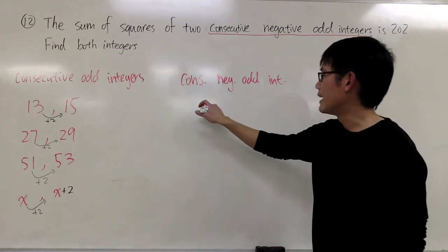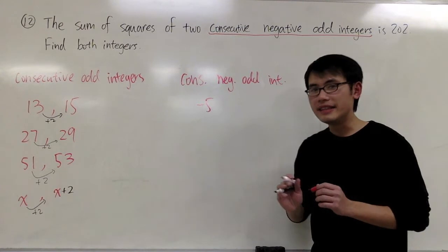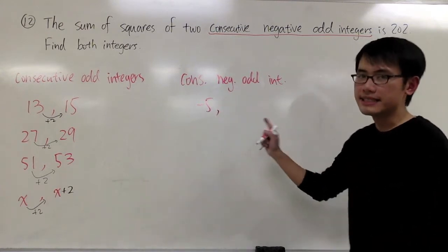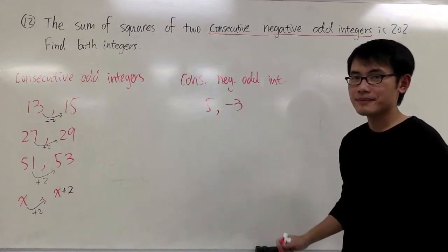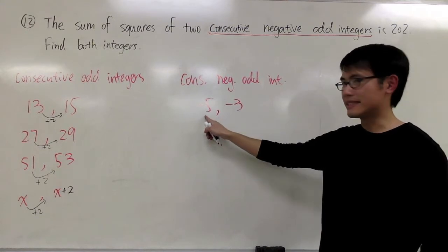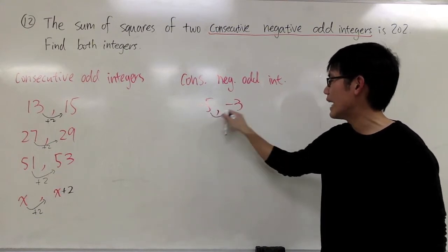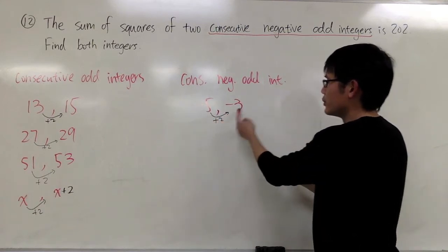So, if I have, let's say, negative 5 as my first negative odd integer, the next one, it's not going to be negative 7, but rather, it will be negative 3. Because negative 5 is smaller than negative 3. And you see that again, we just have to add 2 to negative 5 in order to get negative 3.